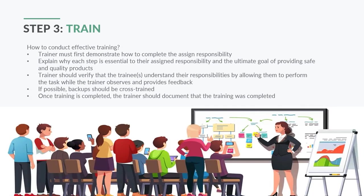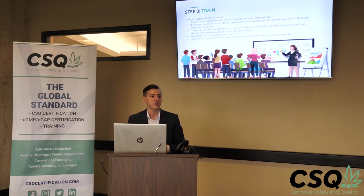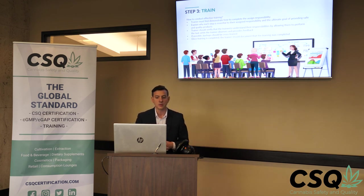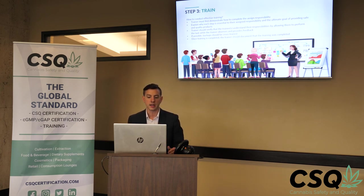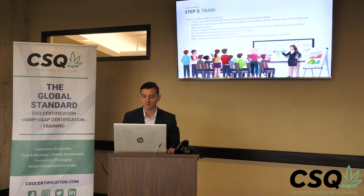Step three is to train. For effective training, a trainer must first demonstrate how to complete the assigned responsibility and explain why each step is essential and why providing safe, quality products is the ultimate goal. If you only explain the procedure without telling employees why they're doing it, they won't absorb the information as well. The trainer should verify trainees understand their responsibilities by observing them perform the task. Backups should be cross-trained, and once training is complete, the trainer should document when training was completed.